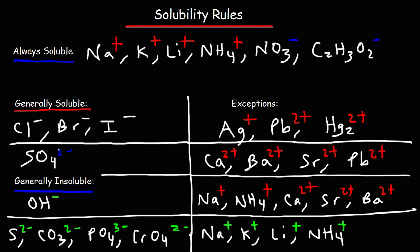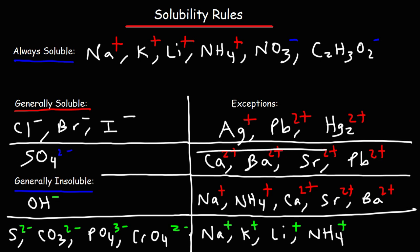Sulfates are generally soluble. The exceptions are certain Group 2 metals like calcium, barium, and strontium, and also lead(II).